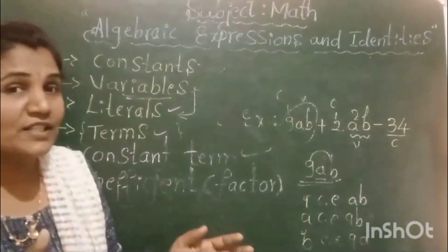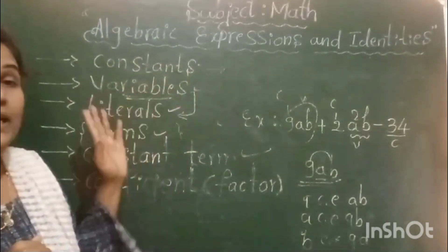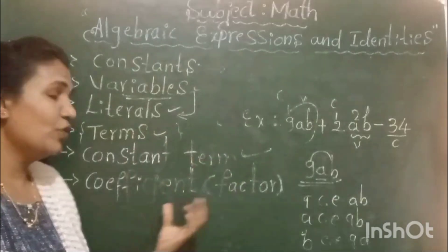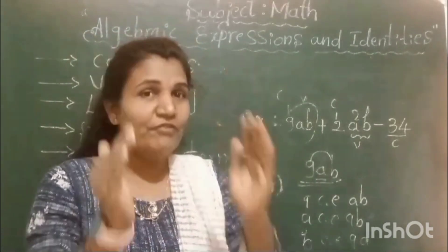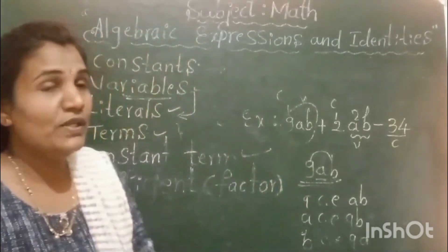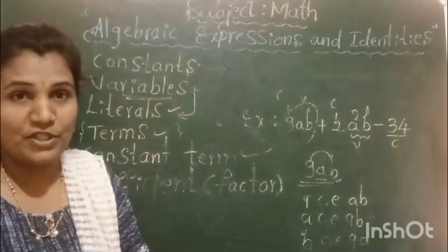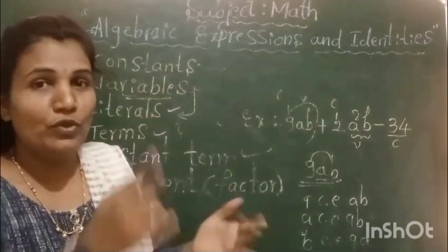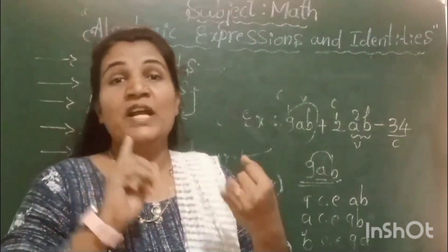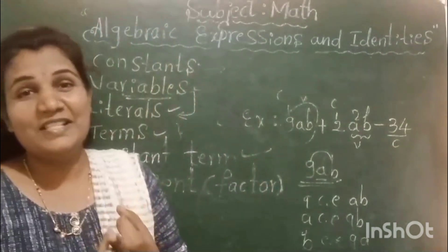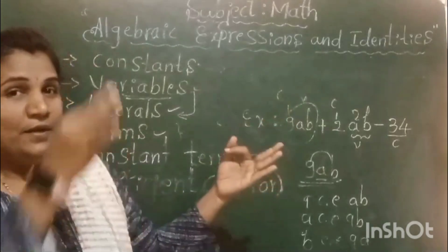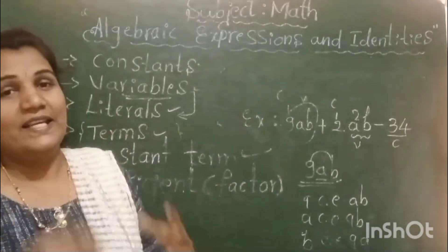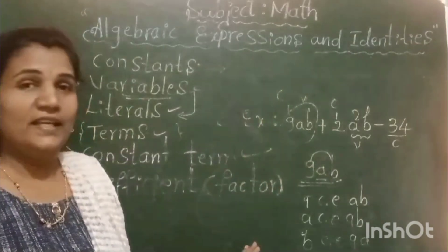In this class we learnt about constant, variable, literal, term, constant term, and coefficient or factor. These are the fundamental concepts which come under algebraic expressions — very basic things we should know before moving to types of algebraic expressions, addition, and subtraction of algebraic expressions.